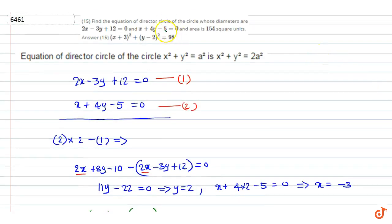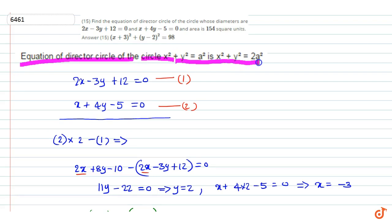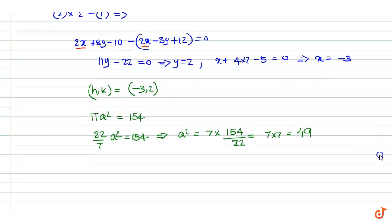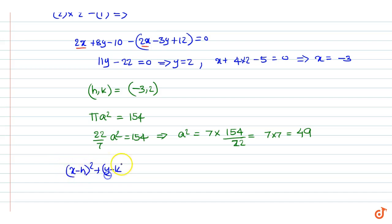Now, we know that the equation of the director circle of the circle x squared plus y squared equal to a squared is x squared plus y squared equal to 2a squared. Therefore, the equation of the given circle is x minus h whole squared plus y minus k whole squared equal to a squared.